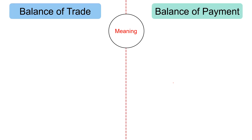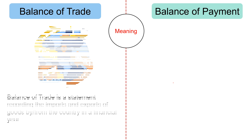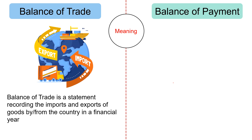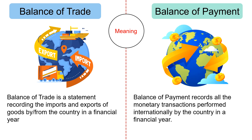Moving on to the difference between balance of trade and balance of payment. Balance of trade is a statement recording the imports and exports of goods by or from the country in a financial year. On the other hand, balance of payment records all the monetary transactions performed internationally by the country in a financial year.